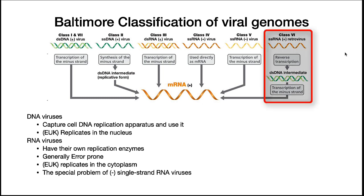Class 6 viruses are also strange. They are positive single-stranded RNA viruses that copy themselves into a double-stranded DNA intermediate, which is then used for transcription and translation. These are the retroviruses, discovered by Temin and Baltimore. Professor Howard Temin worked at UW-Madison.